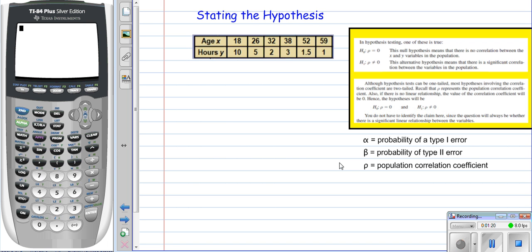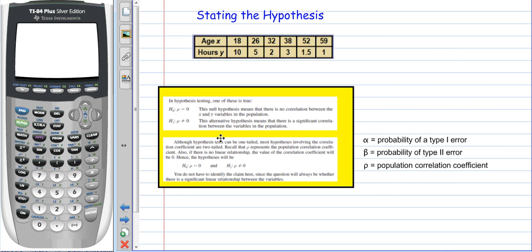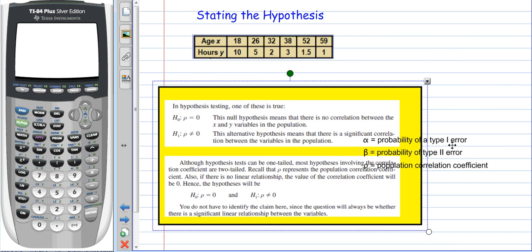So our first thing is that when we're doing these questions out of section 10.1, we need to state our hypothesis. The key thing is that we have two types of situations: we have our null hypothesis and our alternative hypothesis. Basically, the null hypothesis is saying that there is no correlation between the variables in the population. Whereas the alternative hypothesis would be that there is a significant correlation between the variables in this population that I'm looking at right here.